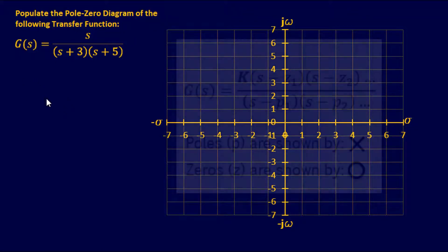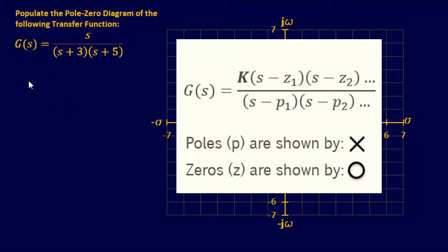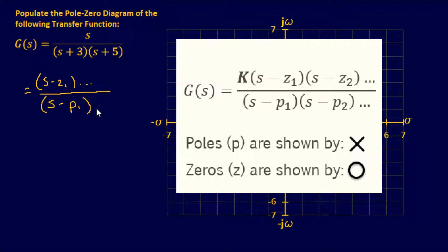As discussed earlier, we want this to look like the typical pole-zero diagram equation form: s minus your first zero, and so on, over s minus your first pole, and so on. Unfortunately these are positive numbers, which is what we're used to seeing. We need to convert them to negative numbers to fit this equation form.